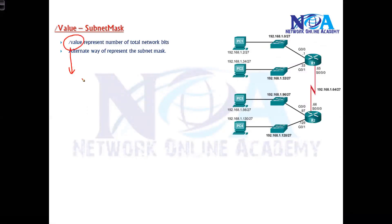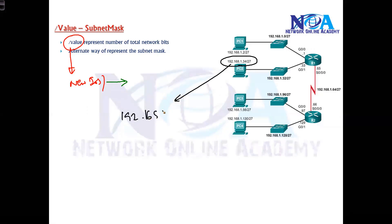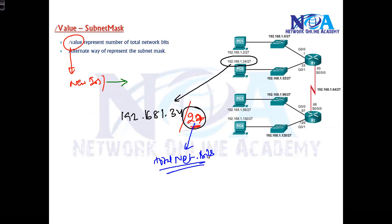In newer operating systems, newer IOS, or in some newer devices, we generally write in a different format. In documentation diagrams you may see something like 192.168.1.34/27. This is called slash notation or slash value, and it indicates how many total network bits we have. So this IP belongs to a subnet which has 27 network bits.